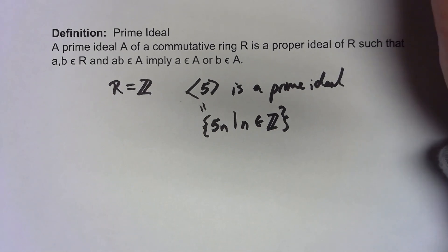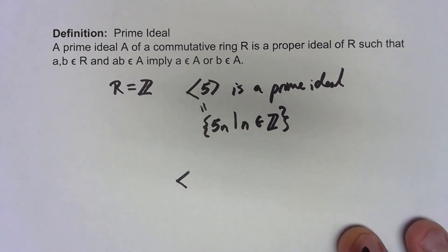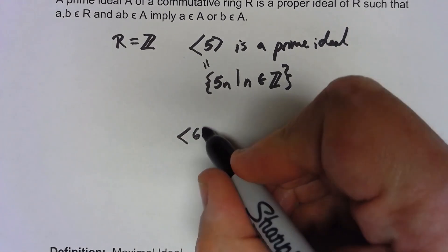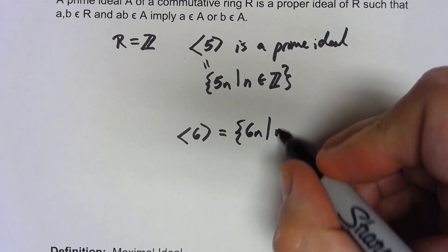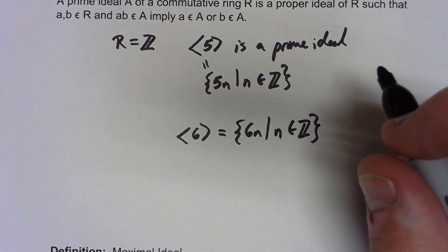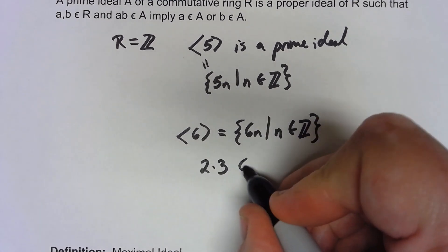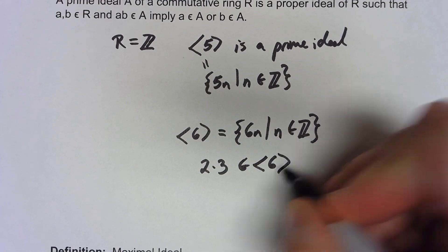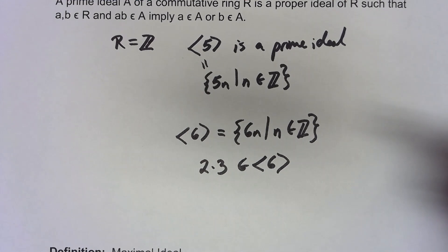Now, of course, that doesn't work for all integers. If I took the ideal generated by 6, same kind of thing, {6n such that n is an element of Z}, that's not necessarily a prime ideal because 2 times 3 is certainly an element of that ideal, but 2 and 3, neither one of them is in there.